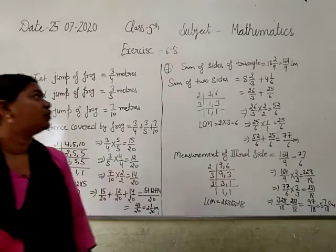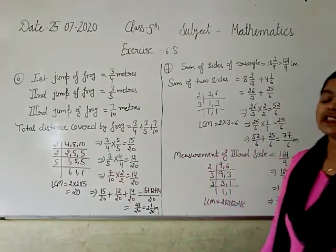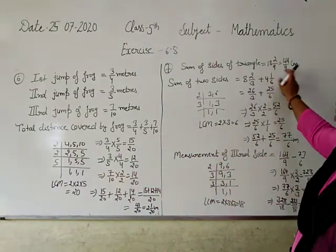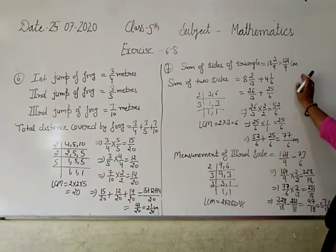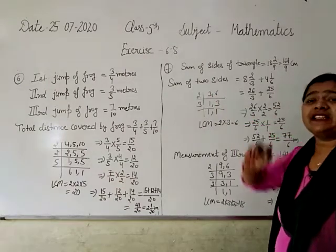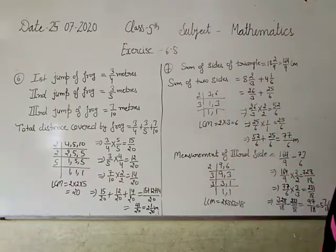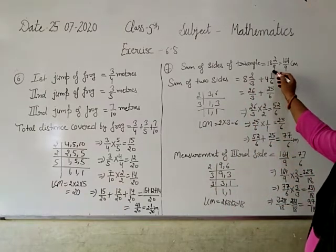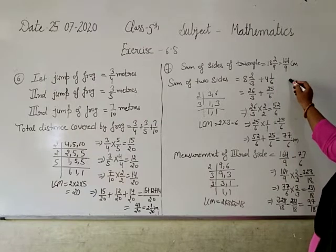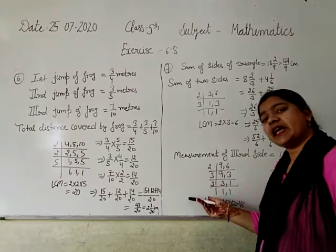Next is 7th question. The sum of the sides of triangle is 18 and 2 by 9. Convert mixed to improper fraction: 164 by 9 cm. Two sides are given. You will add them, because triangle has 3 sides. If you add the 2 sides and subtract from total, you'll get the third side. You need to find measurement of third side.